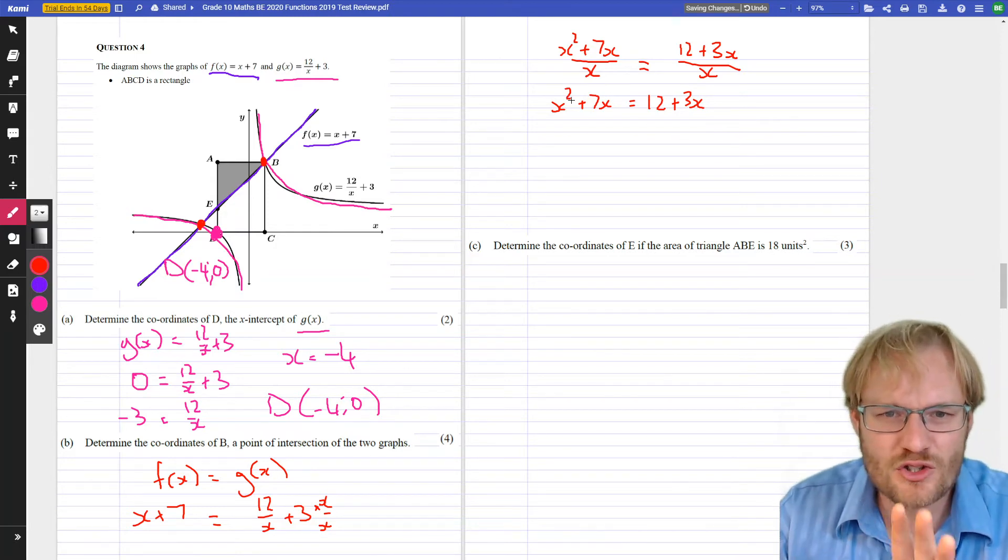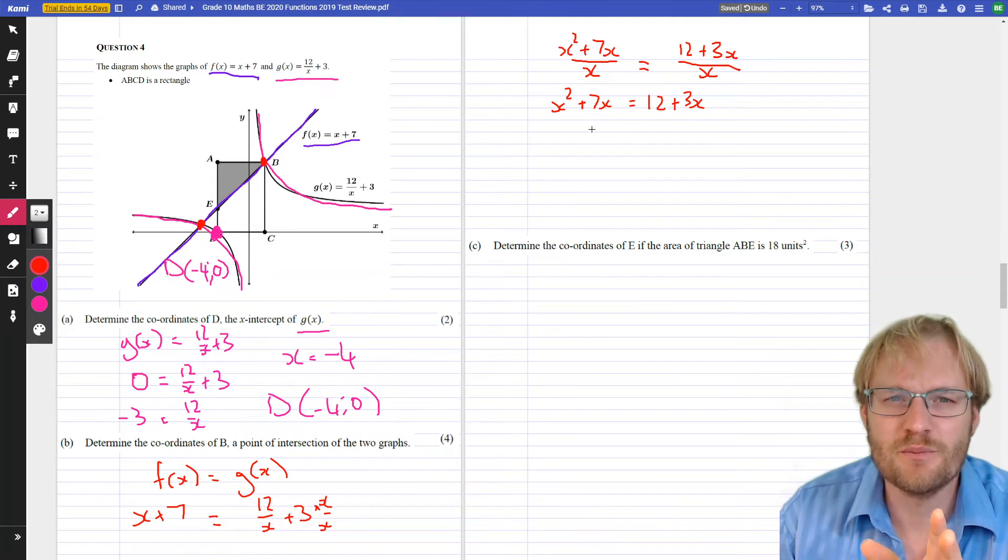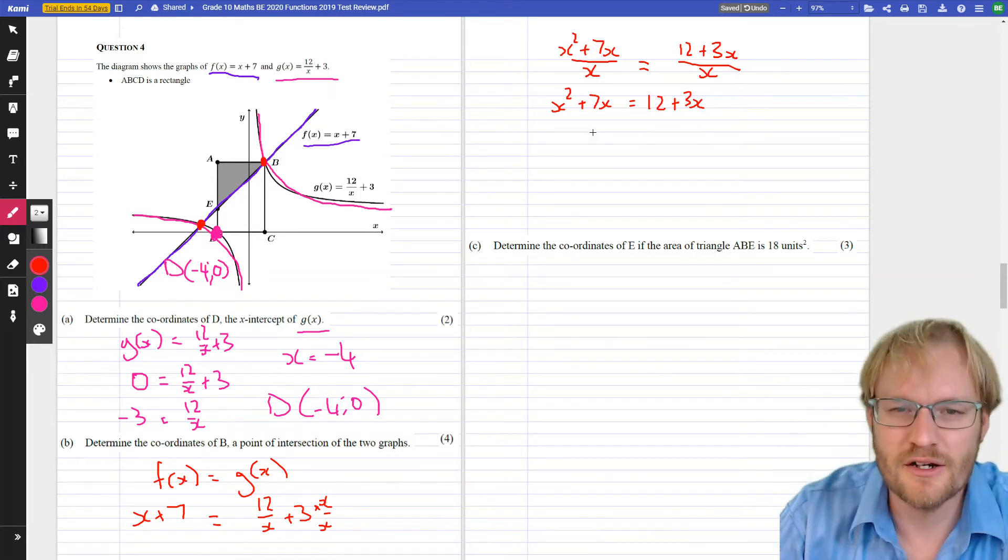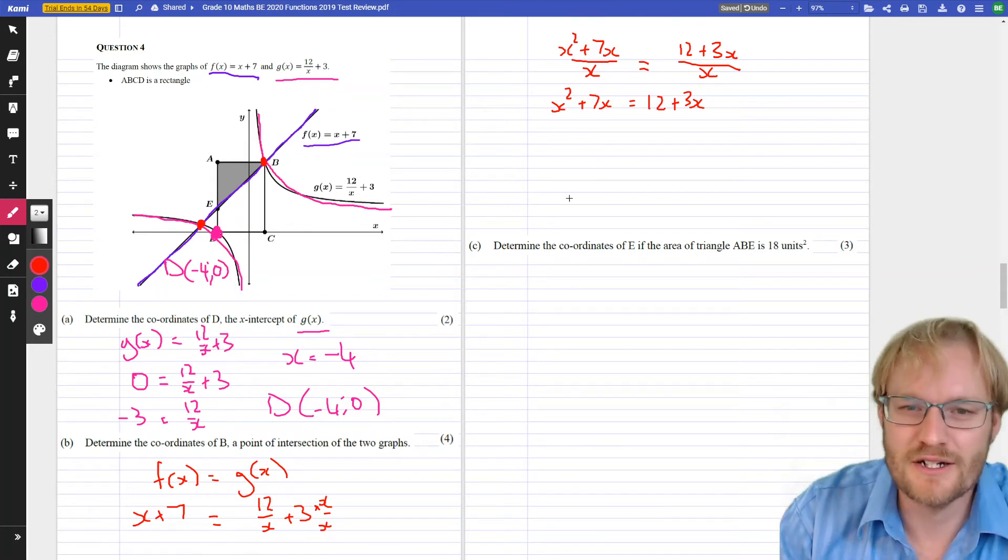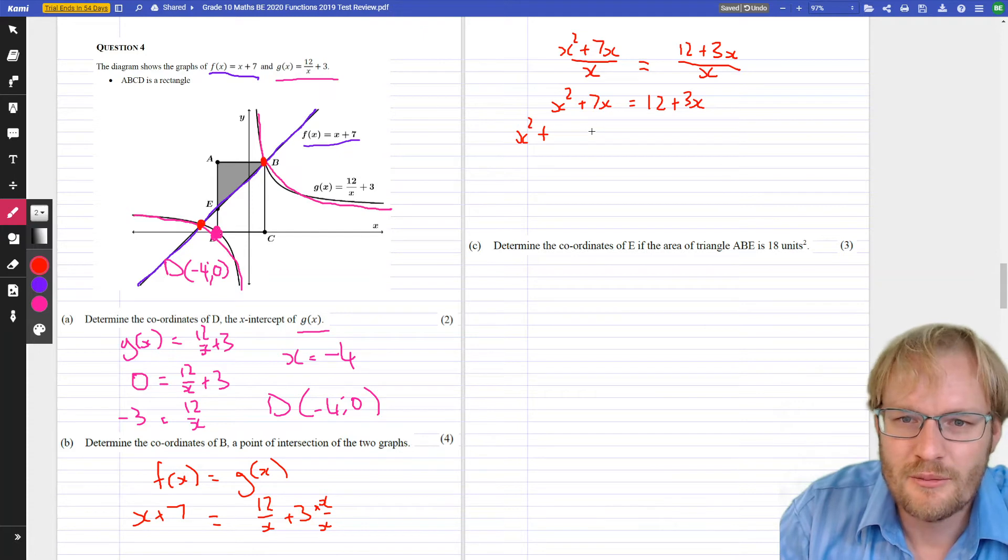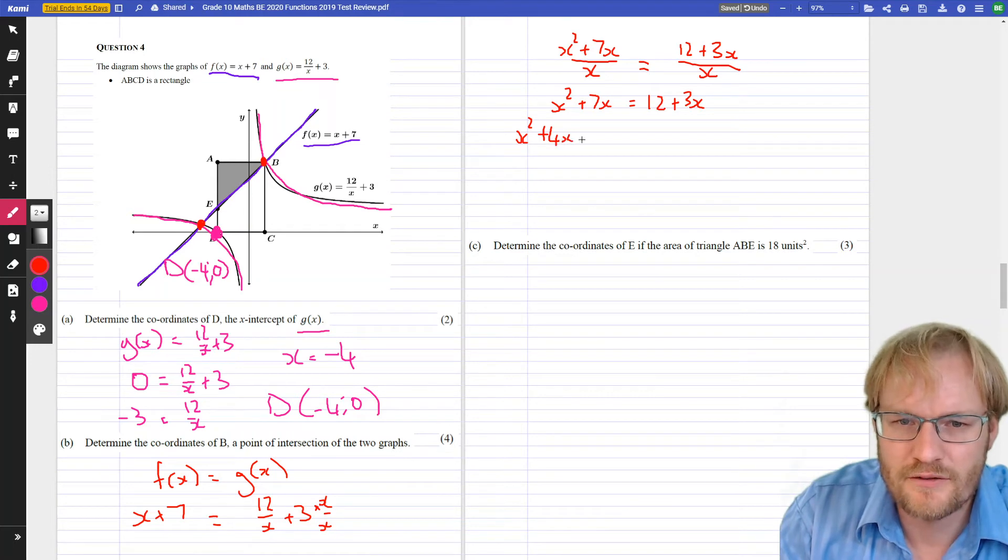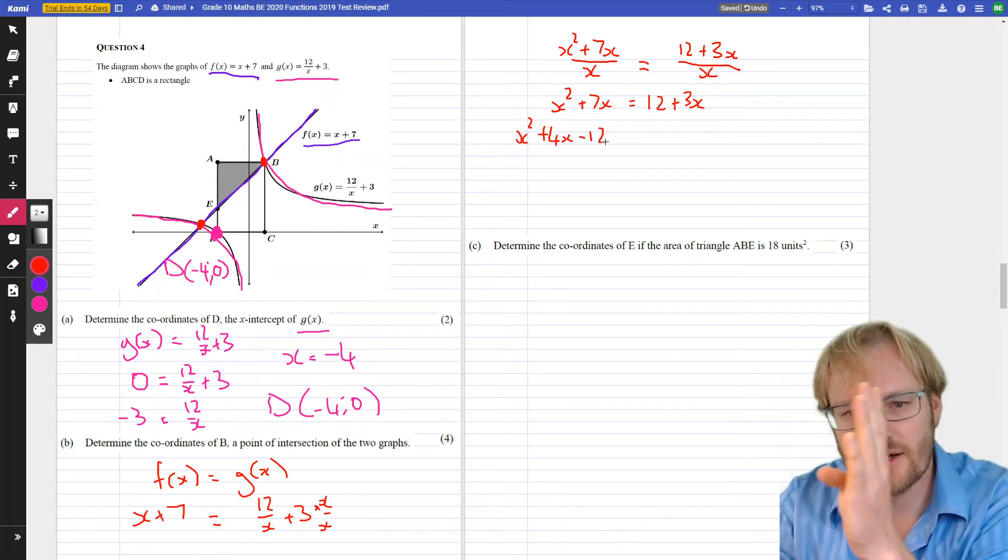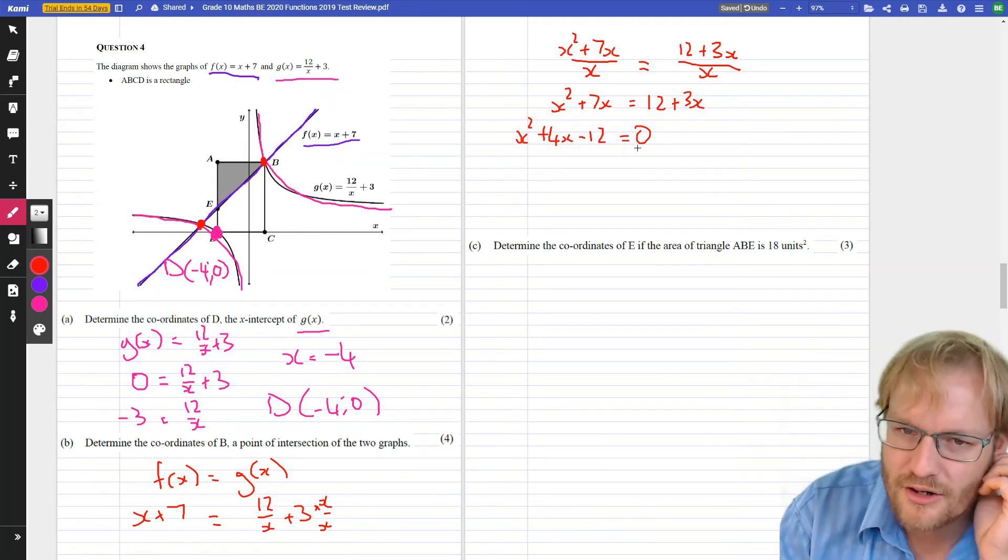We've got a quadratic, and we generally solve our quadratic equations by rearranging them. So, we've got everything on one side equals 0, and we can use that factorization trick. So, X squared, plus 7X, 3X, let's subtract 3X from both sides, so we've got 4X. Positive 12, we're going to subtract 12 from the right-hand side, so we're going to get negative 12 there equals 0.